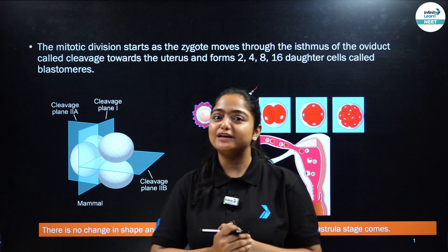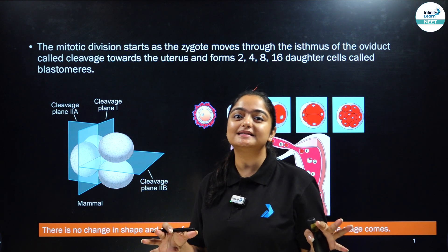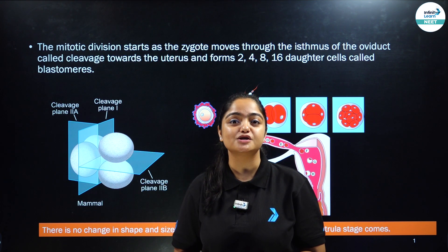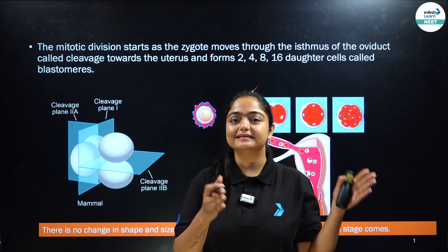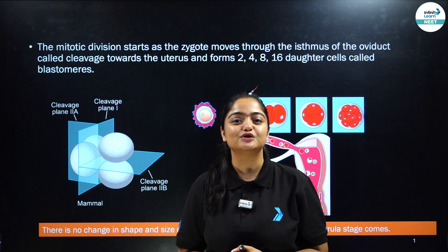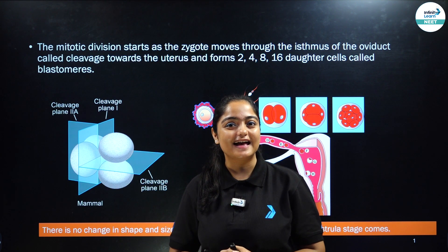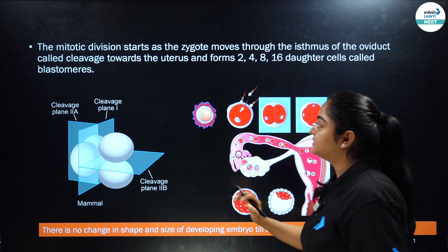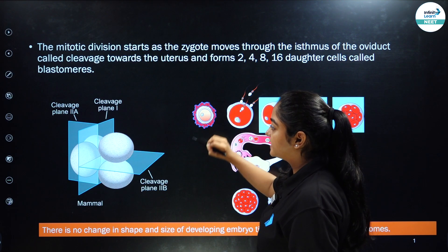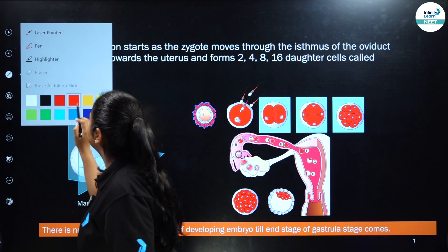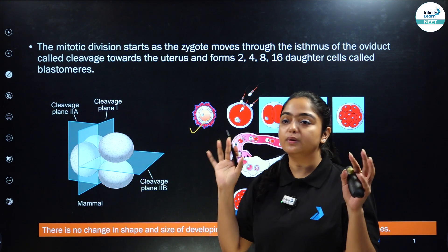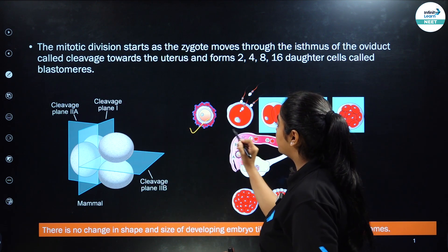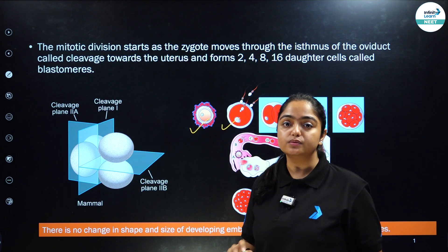I'm pretty sure you understood the embryonic or prenatal development well through that animation. Now let's link that animation with the diagram given in your NCERT and clarify all doubts. Here you can clearly see that the secondary oocyte is released after ovulation from the ovary.